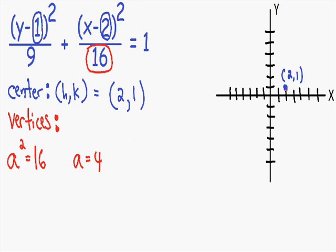So a distance of 4 is the distance between the center and the vertices. But we don't know which direction — is it 4 units to the right, or 4 units up and down? To find out, I look at where our a squared term is. Our a squared term is under the x value, so the vertices are going to be 4 units in the x direction — that is, right and left. So I go 1, 2, 3, 4 units to the right for one vertex.